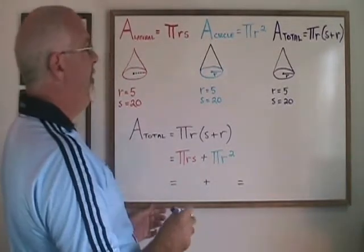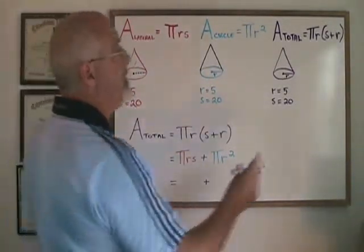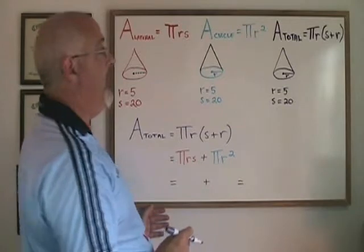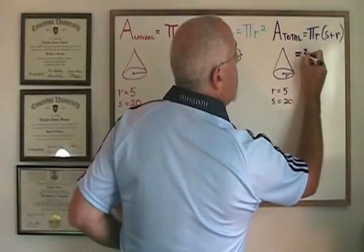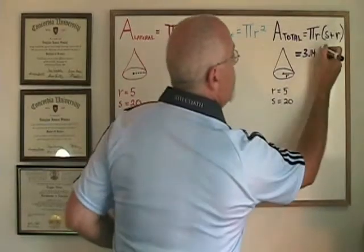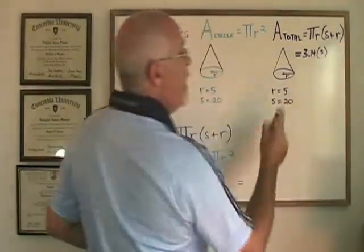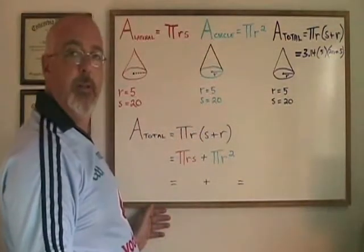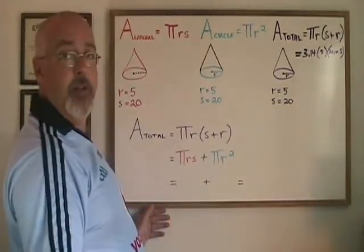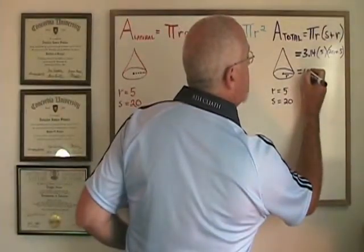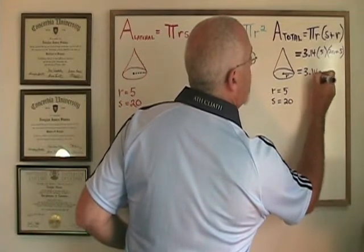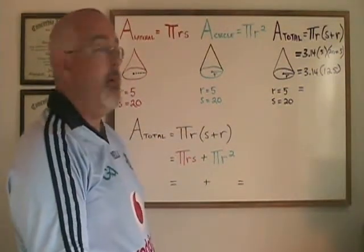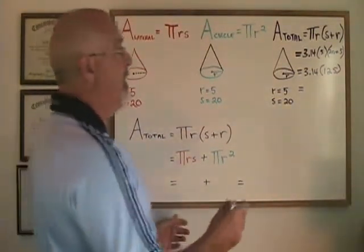In this example, the radius is 5 and the slanted height is 20. So when I plug these numbers into this formula and use 3.14 as my approximation of pi, I get this: pi is 3.14, r is 5, and s plus r is 20 plus 5. Of course, 20 plus 5 is 25, and 5 times 25 is 125, so we are finding the answer of 3.14 times 125. The answer to 3.14 times 125 is 392.5.